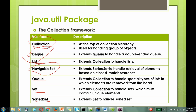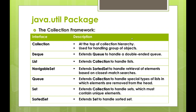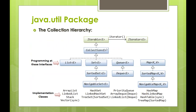The mandatory interfaces to cover are collection, list, queue, set, and sorted set. In the relationship diagram, collection is at the root, and all these are generic interfaces. Map is not part of the collection framework but we will discuss it. These interfaces form the collection framework.